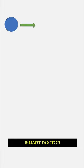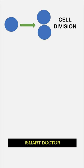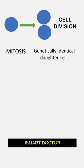In our body, we divide cells through a process called cell division. In cell division, there is a type called mitosis. Mitosis produces genetically identical daughter cells.